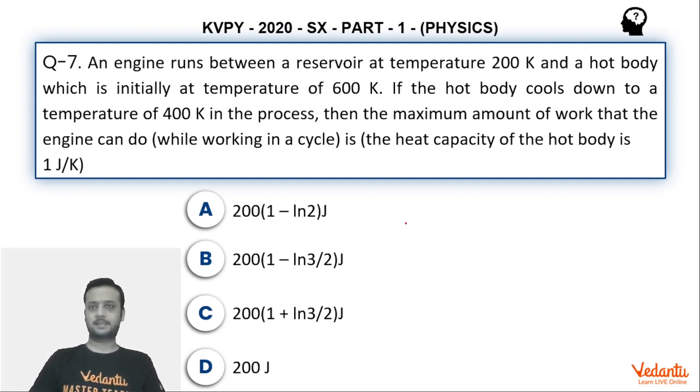In this, there is an engine which is working in a cyclic process between the temperature 200 Kelvin, which is constant temperature, and another hot body which is initially at 600 Kelvin. So basically if we try to understand, suppose this is an engine.